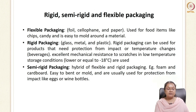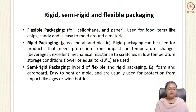Flexible packaging systems consist of foils, cellophanes, and papers, and these are mainly used for packing chips and candies because they are easy to mold. Rigid packaging materials are rigid in their structure and include glass, metal, and plastics. They give protection to the contents from temperatures and impacts during transportation, and have very good mechanical resistance to scratches even in low-temperature storage.